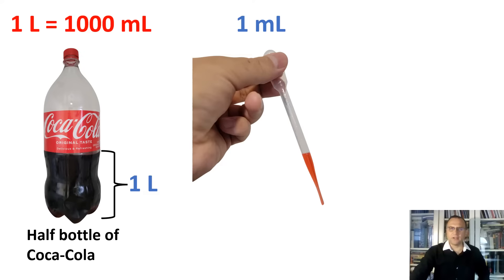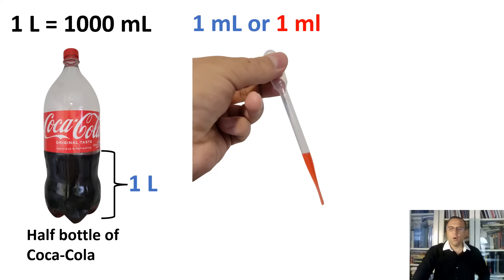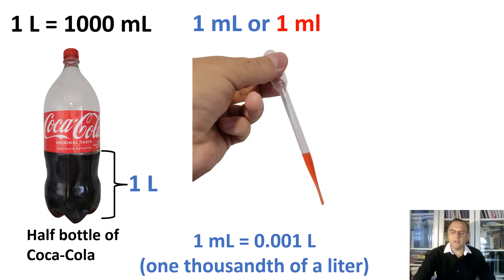One liter equals 1,000 milliliters. Milliliters are abbreviated either as lowercase m and uppercase L, or lowercase m and lowercase l. Both abbreviations are acceptable, but most technical people use lowercase m and capital L for clarity. A milliliter is a very small amount — it is one thousandth of a liter.